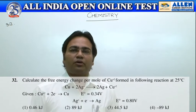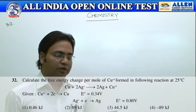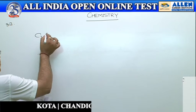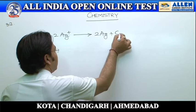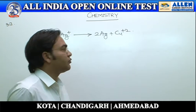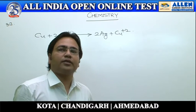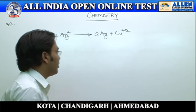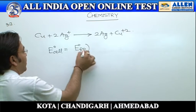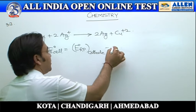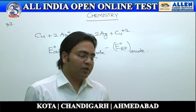Question 32 is based on electrochemistry. We have to calculate the free energy change per mole of copper(+2) formed in the given reaction. From the reaction, copper is oxidized to Cu²⁺ and Ag⁺ is reduced to Ag. Hence, the copper electrode works as the anode while the silver electrode works as the cathode. First, we find E°cell.